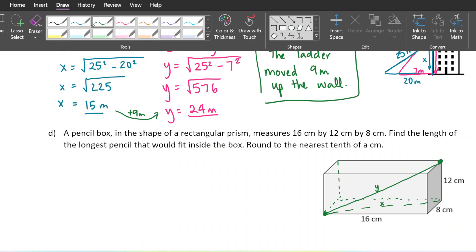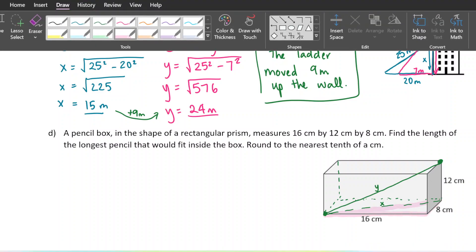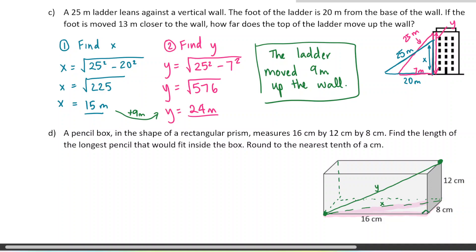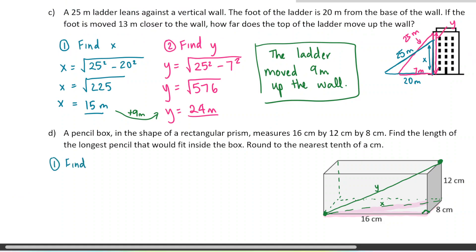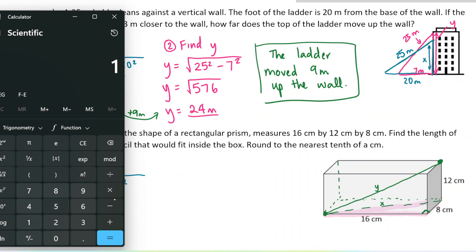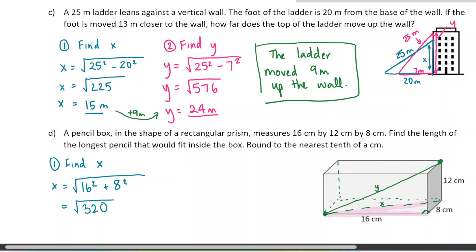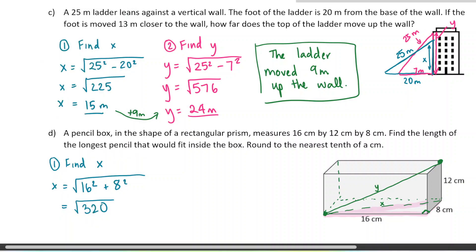The first thing I'm going to do is use this right triangle lying flat on the base of the box — the right angle is in this corner. Step one: I'll do the Pythagorean theorem on that pink triangle to find X. So X equals the square root of 16 squared plus 8 squared. I'm not going to evaluate this fully — I'll leave it in square root form to avoid rounding errors. 16 squared plus 8 squared equals 320, so X equals square root of 320.